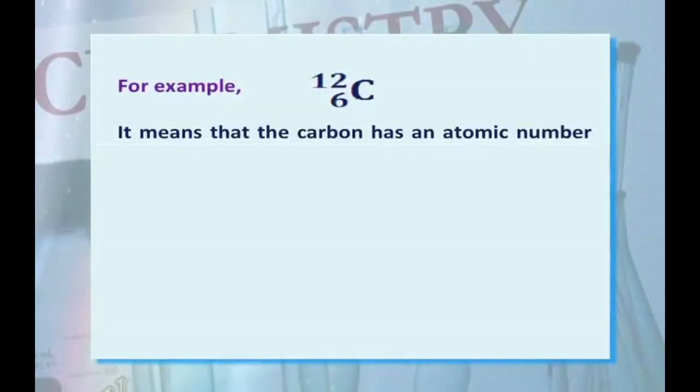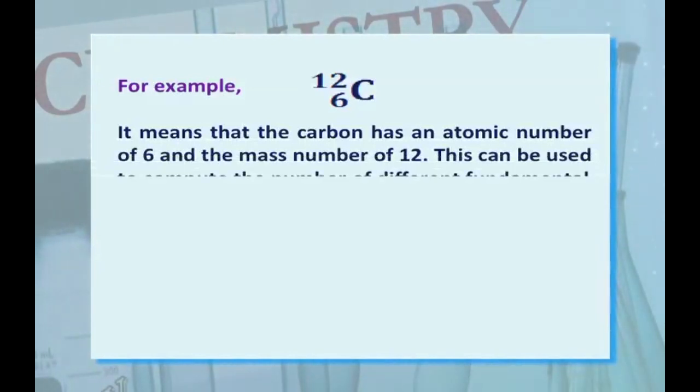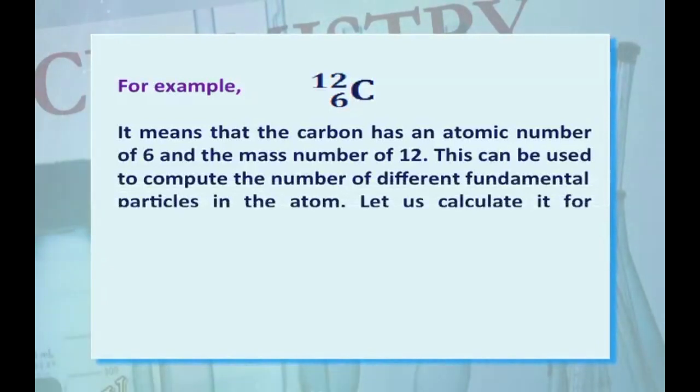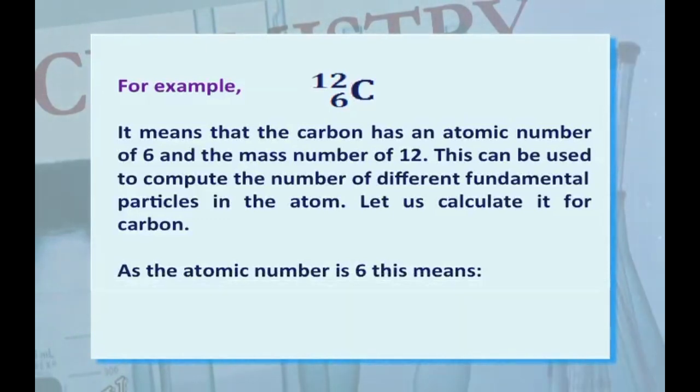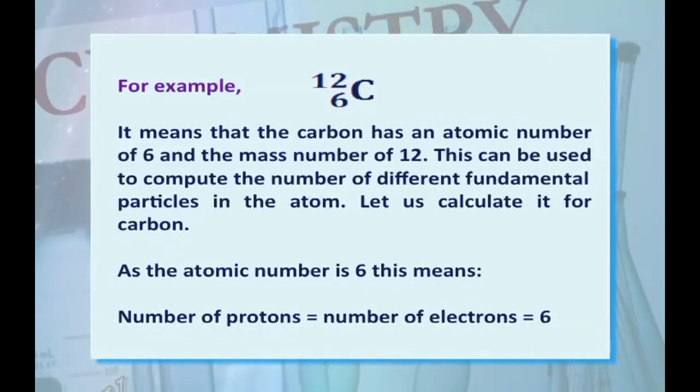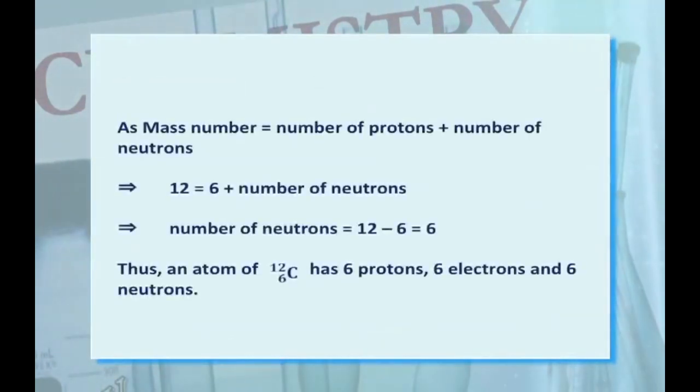For example, carbon-12 with 6 means that carbon has atomic number 6 and mass number 12. This can be used to compute the number of different fundamental particles in the atom. Let us calculate its electrons, protons and neutrons for carbon. As the atomic number is 6, this means number of protons equals number of electrons equals 6 because it is a neutral atom. As mass number equals number of protons plus number of neutrons, we put the relation here: 12 = 6 + number of neutrons. Then we get the number of neutrons is equal to 6. Thus, an atom of C-12 has 6 protons, 6 electrons and 6 neutrons.